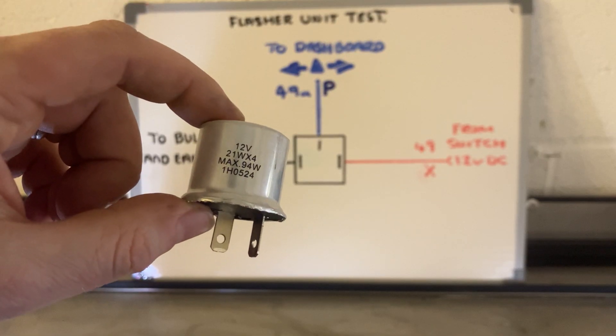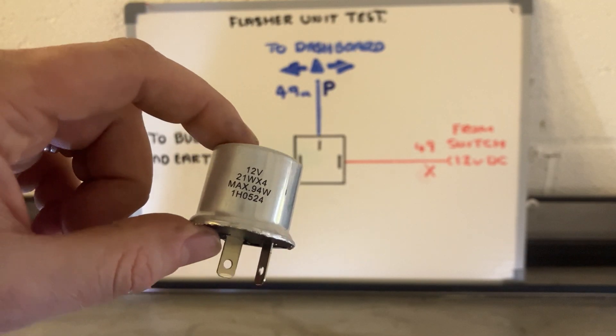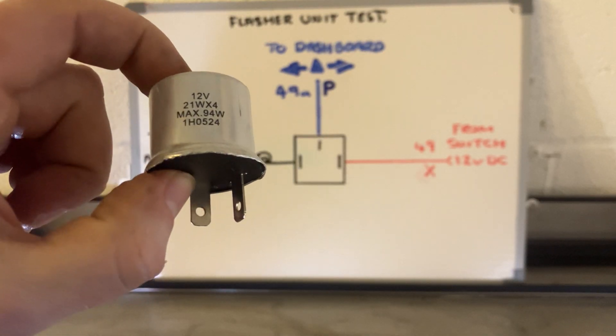These flasher can units were used until the 1980s and then they were replaced by a digital version using capacitors. I'll show you one of those later. But this is an old-fashioned version that we can test.